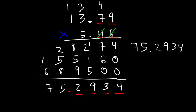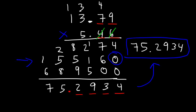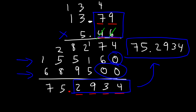Now, if you have your calculator, you can confirm all of these answers. If you type in 13.79 times 5.46, this is indeed 75.2934. So now you know how to multiply two numbers that contain decimals. Every time you need to add a new line, don't forget to add a 0. If you're on your third line, you're adding two 0s. And the last thing to keep in mind is the number of digits to the right of the decimal point — make sure it's equal to the total in your final answer.